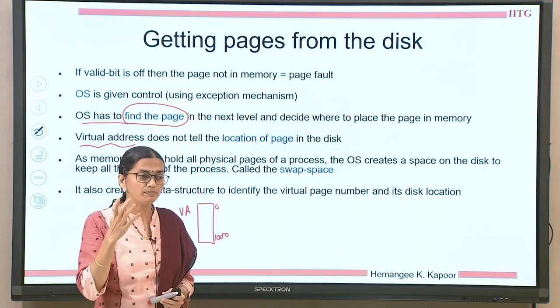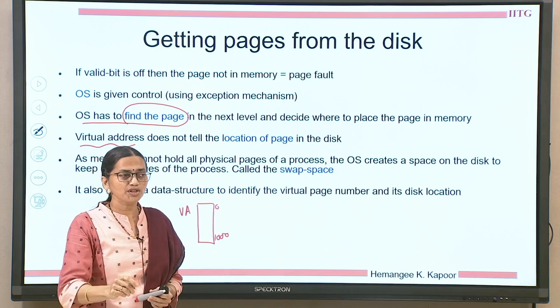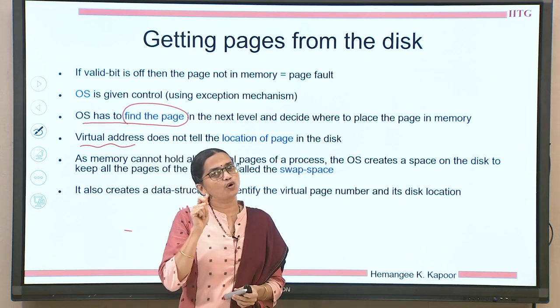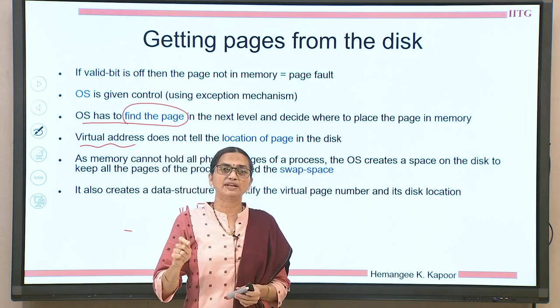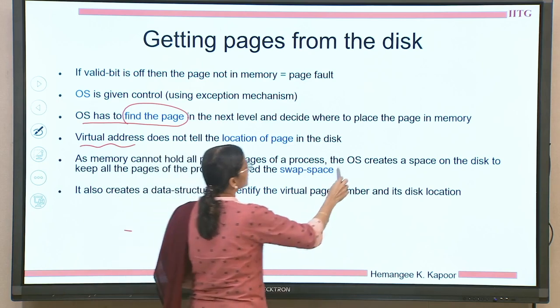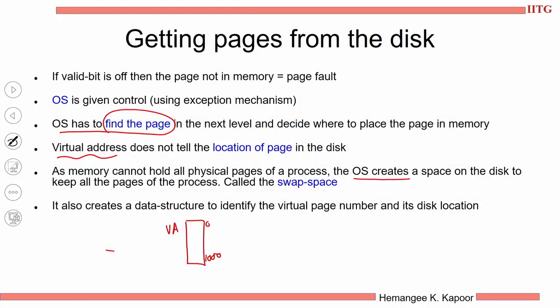The virtual address or the virtual page number tells me nothing of the location of the physical page on the disk. Given the virtual page number, if it hits in the page table, I know the physical page number. But if it misses in the page table, we do not know where it is sitting on the disk. For this, the OS creates extra space — all the pages which could not sit in the RAM will sit on the disk in a special space called the swap space.